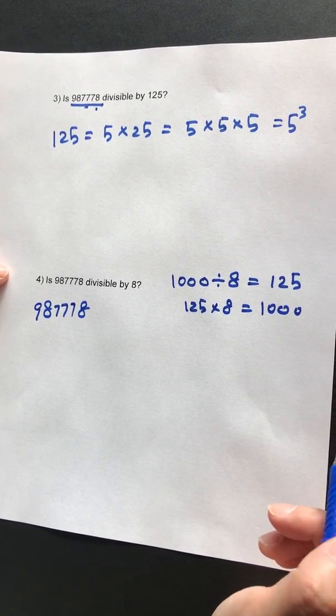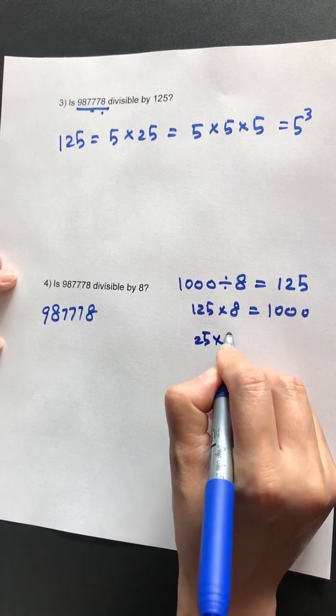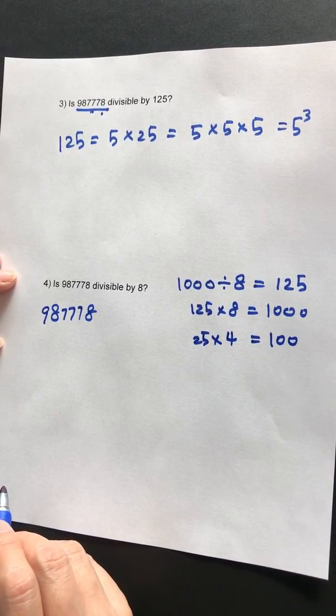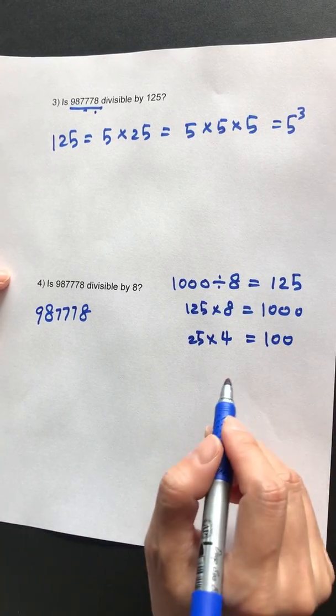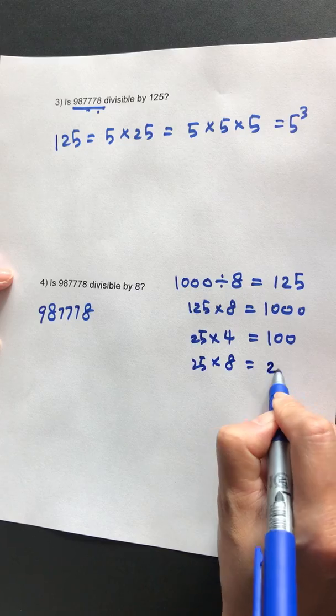That's something easy for students to remember. Also, the other number we want students to remember is 25 multiplied by 4 is 100—we'll use that later—or 25 multiplied by 8 is 200.